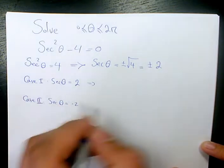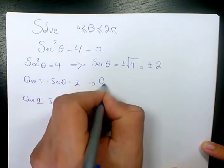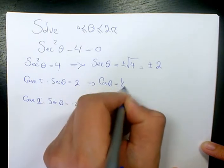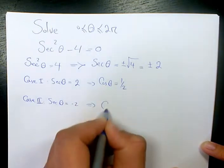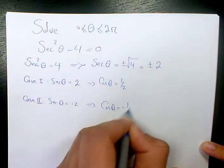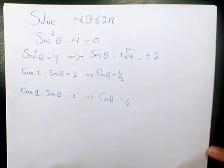Secant is inverse of cosine. So when you flip it, it's going to be cosine theta equals to 1 over 2. And the second case is when cosine theta equals to negative 1 over 2.